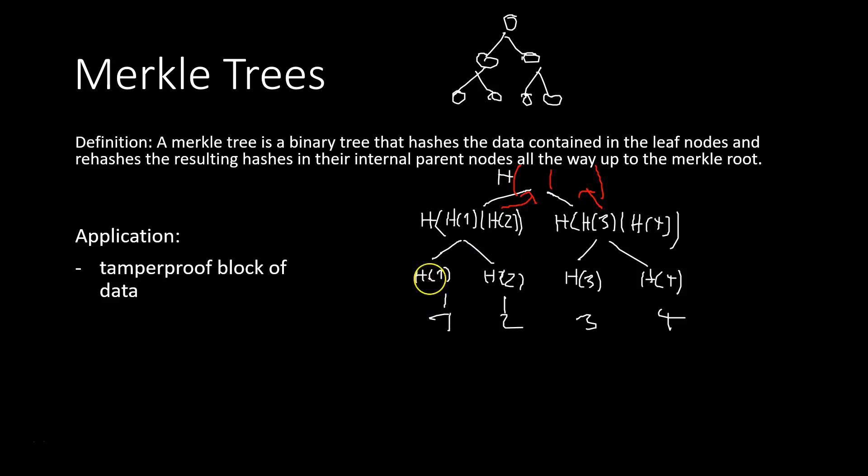If this number changes, this hash changes. Then, also this hash changes, and then, of course, also the Merkle root, this hash changes as well. So whenever something here in our basic data changes, we can right away detect that change here, just by looking at the Merkle root.